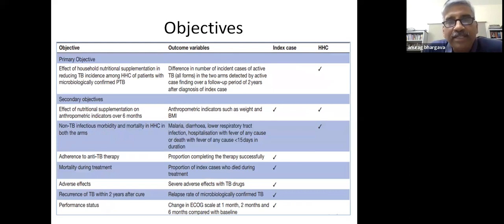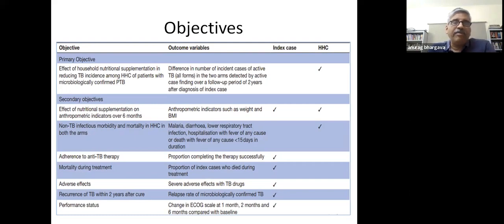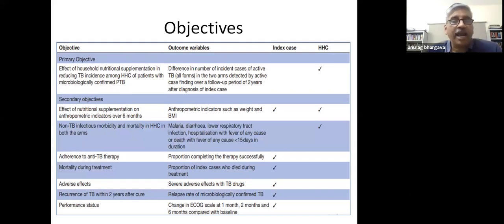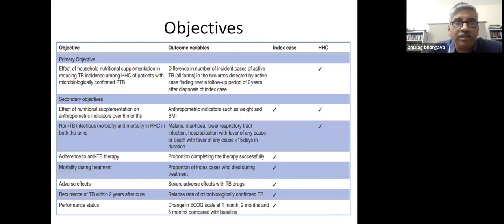The primary objective is to assess the effect of nutritional supplementation on TB incidence among household contacts over two years after diagnosis of the index case. Secondary objectives include effects on weight in patients and contacts; and in patients, adherence, mortality, frequency of major side effects, performance status, and recurrence of TB within two years. Among contacts we are also assessing the intervention's impact on non-TB infections.